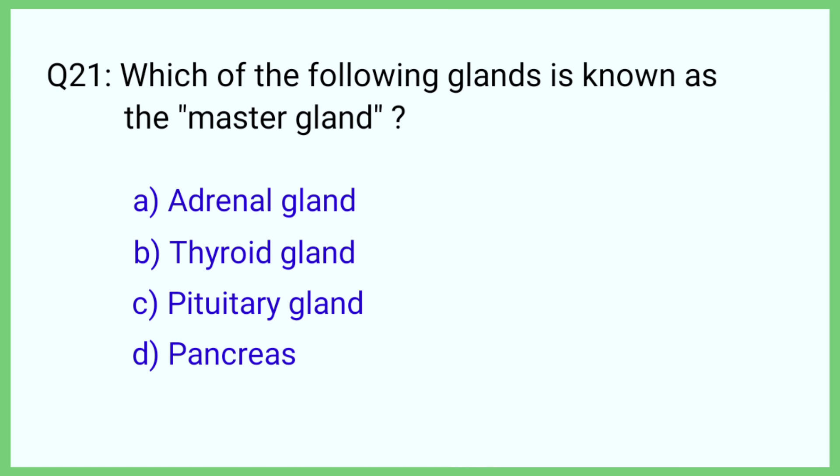Question number 21. Which of the following glands is known as the master gland? The correct answer is option C: Pituitary gland.